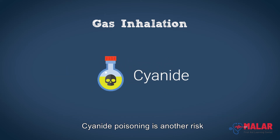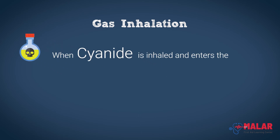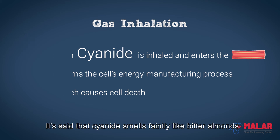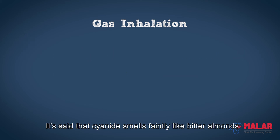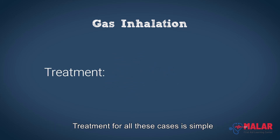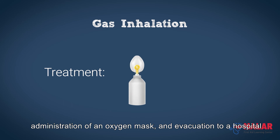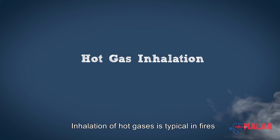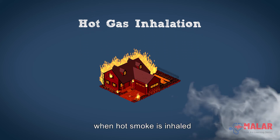Cyanide poisoning is another risk. When cyanide is inhaled and enters the bloodstream, it harms the cells' energy manufacturing process, which causes cell death. It's said that cyanide smells faintly like bitter almonds. Treatment for all these cases is simple: administration of an oxygen mask and evacuation to a hospital.